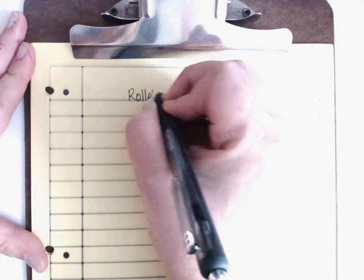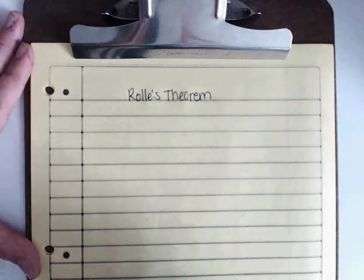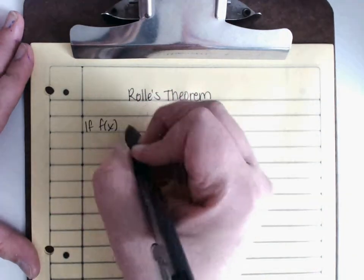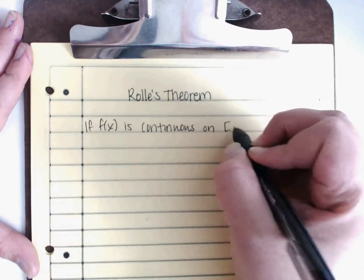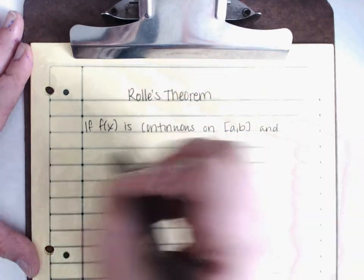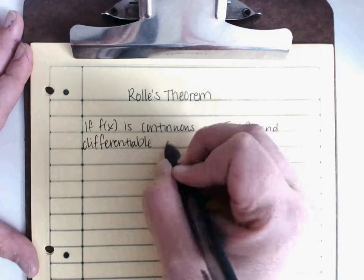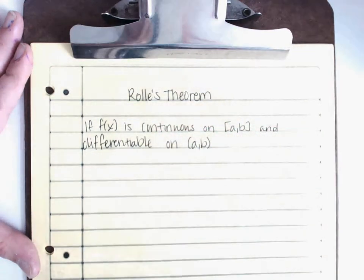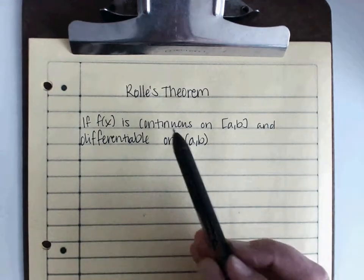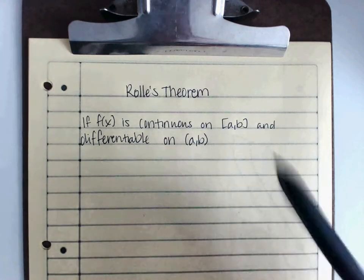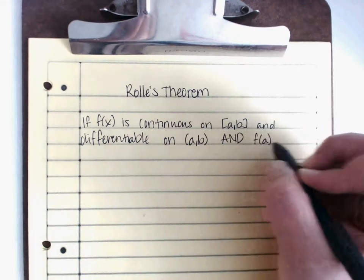Rolle's Theorem is very similar to Mean Value Theorem. It states if f(x) is continuous on the closed interval [a,b] and differentiable on the open interval (a,b). As of that point, this is identical to Mean Value Theorem. But there's one extra step, and f(a) and f(b) are the same.